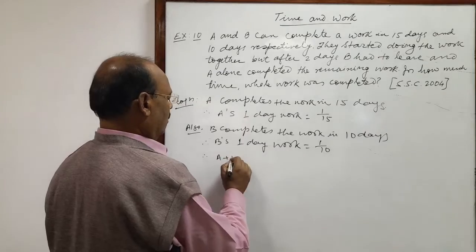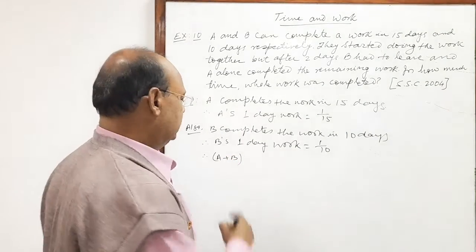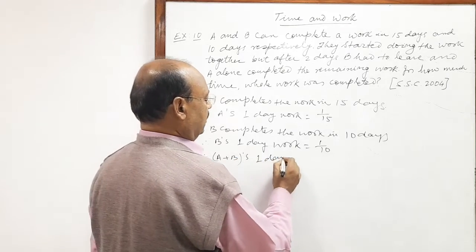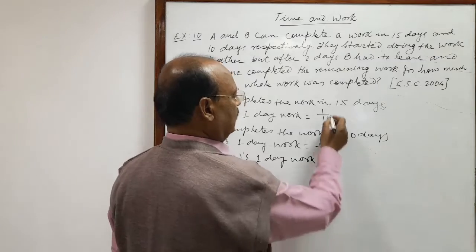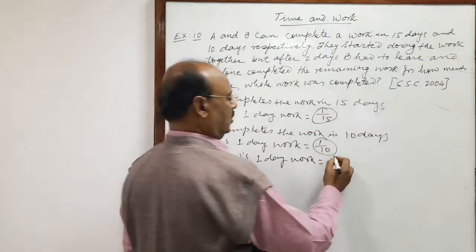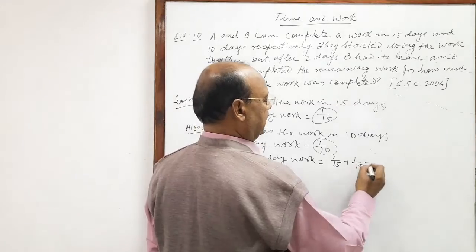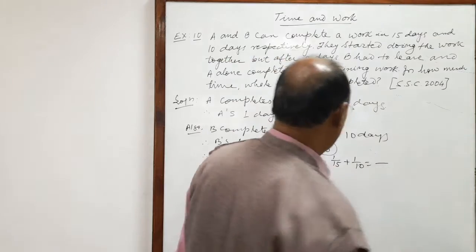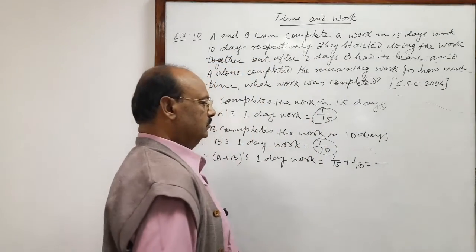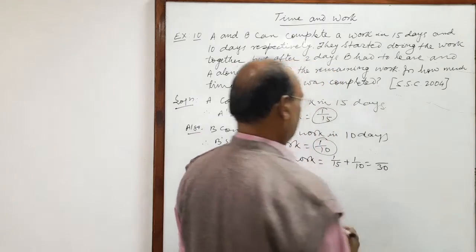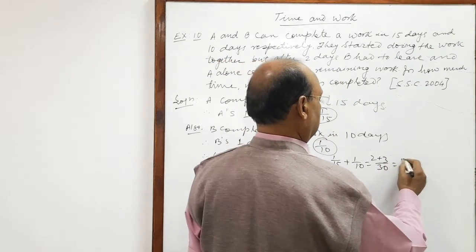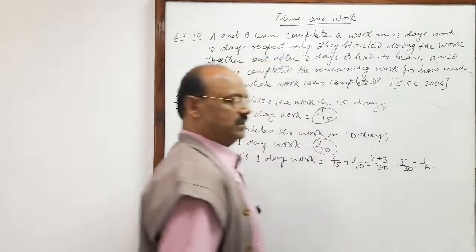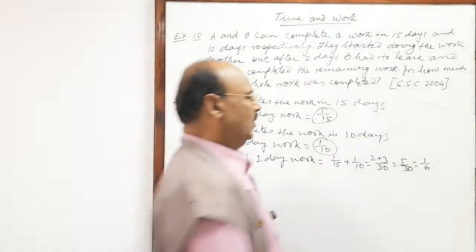They have started to work together, so we calculate A plus B's one day work. We add the two figures: 1/15 plus 1/10. The LCM is 30, giving us 2 plus 3 over 30, which is 5/30, so this equals 1/6. This is the amount of work done when both A and B are working together.